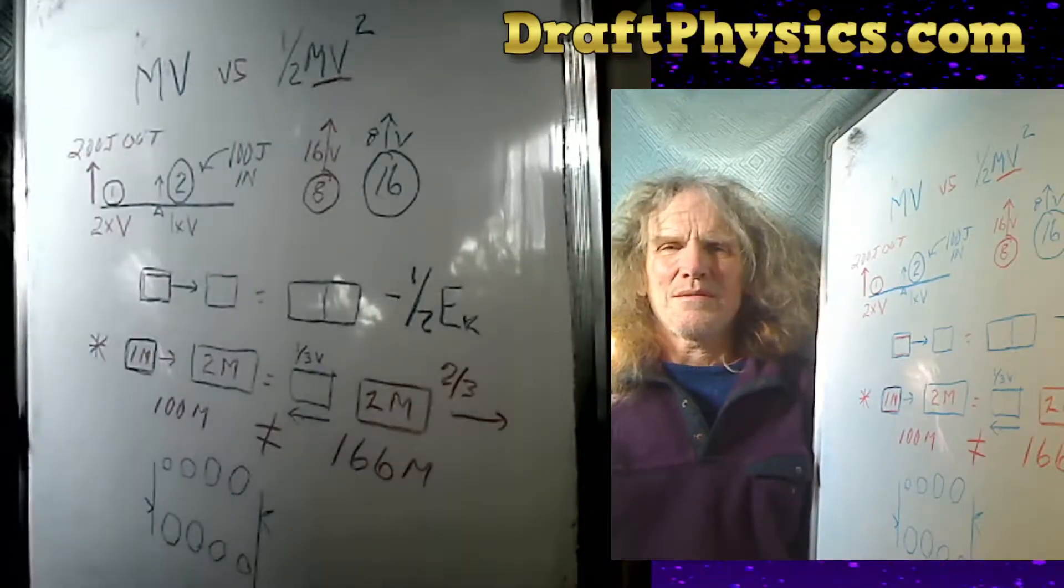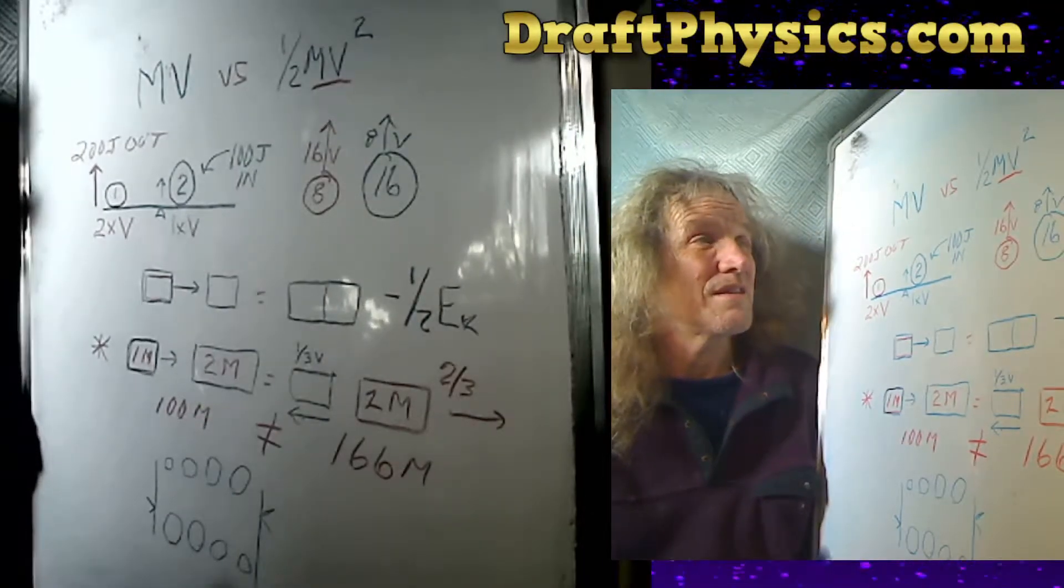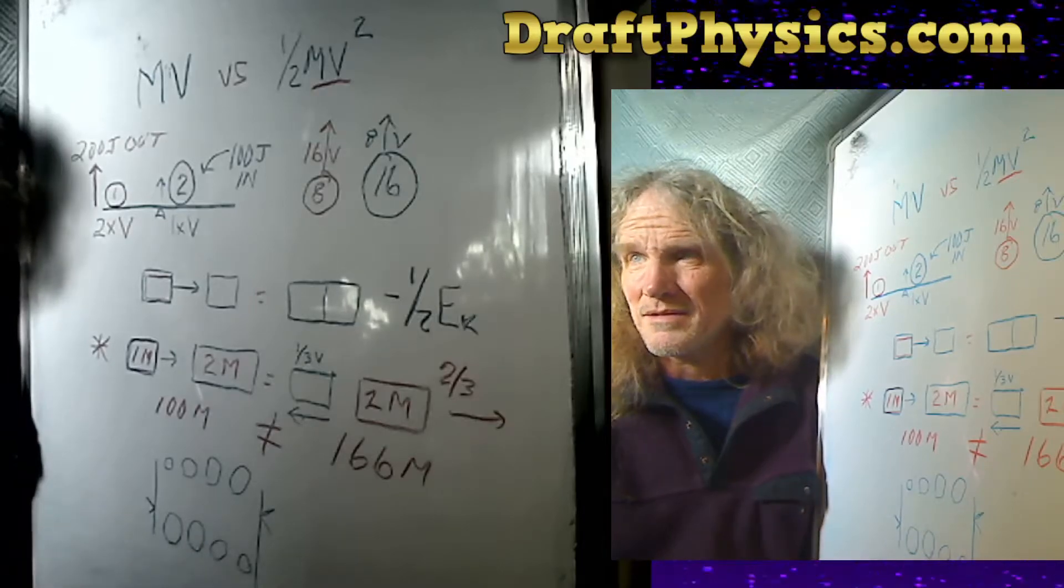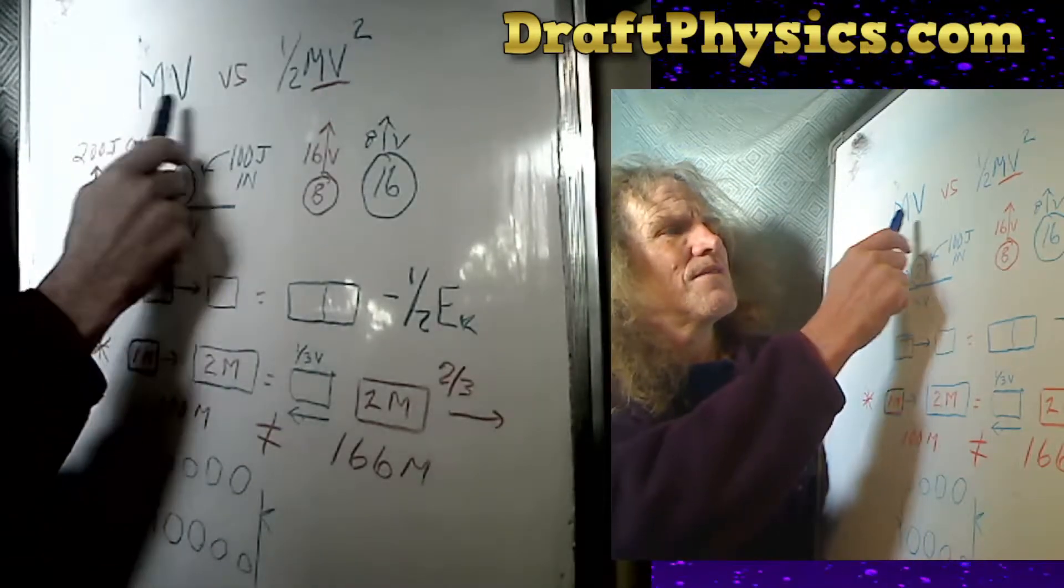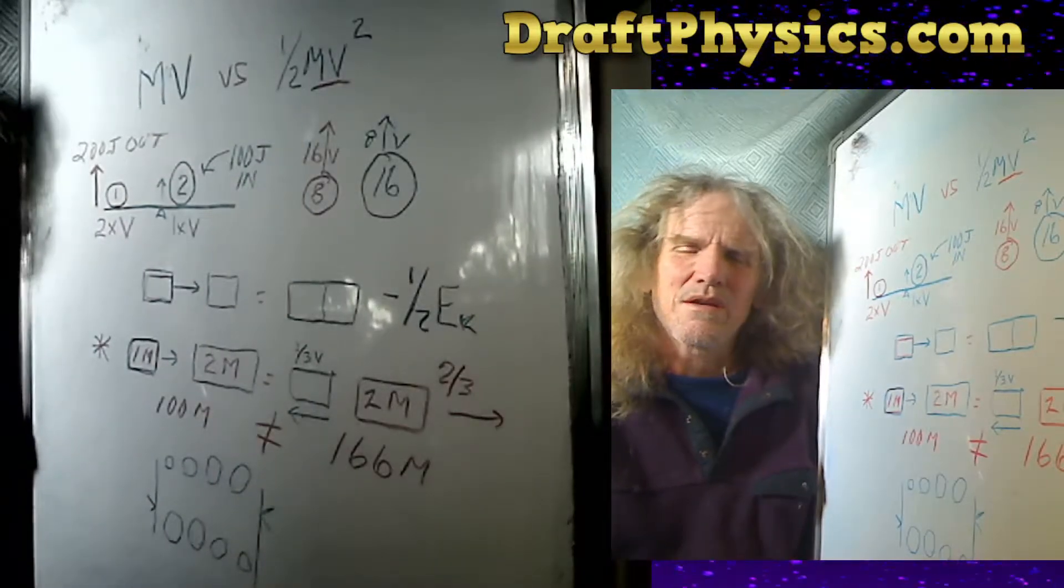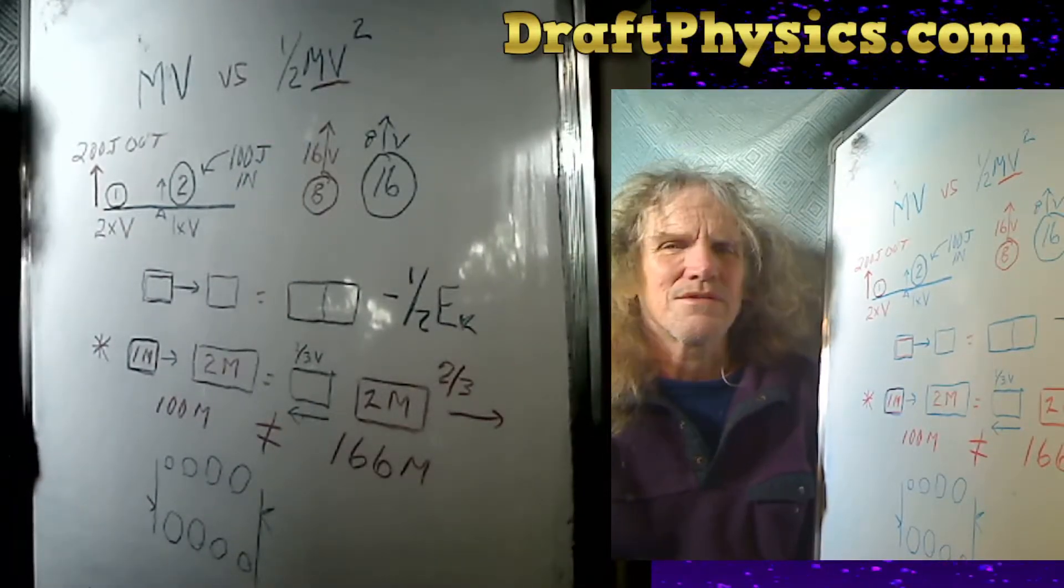All right, quick rundown on what I think is the most obvious and most catastrophic and biggest mistake of science ever. The MV versus ½MV squared controversy, kinetic energy versus momentum.